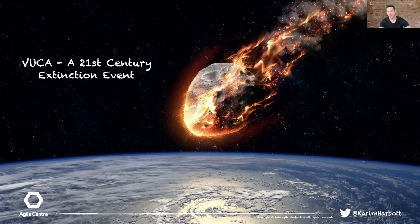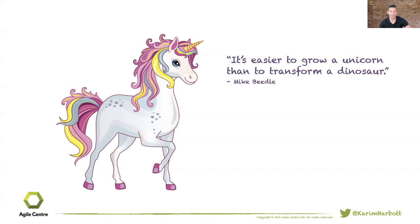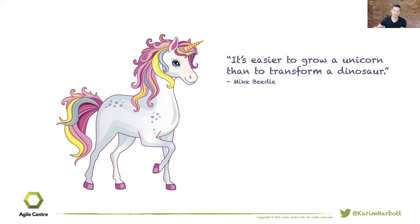A good friend and mentor, Mike Beadle — before we lost him way before his time — used to say: 'Easier to grow a unicorn than to transform a dinosaur.' How many unicorns spring up every year? Lots. How many big transformations of traditional organizations into truly ambidextrous ones achieving real business agility do we see? I can think of perhaps Haier in China, Microsoft under Satya Nadella, and one or two smaller organizations — certainly nowhere near as many.